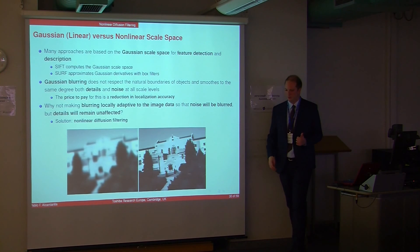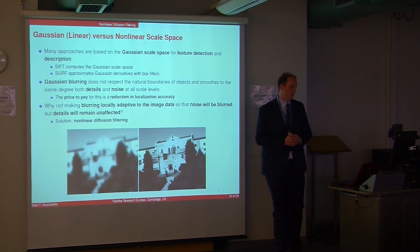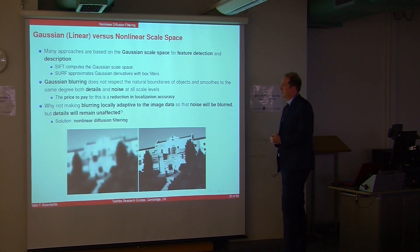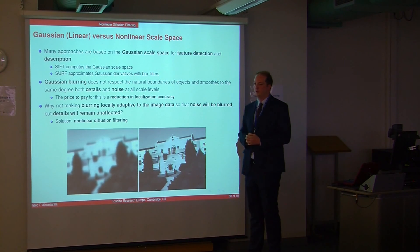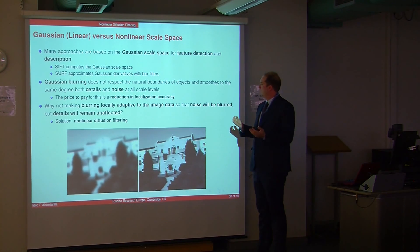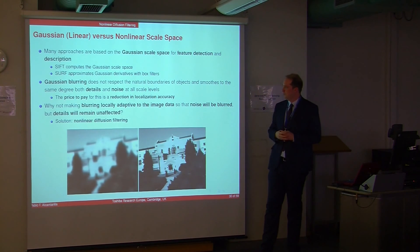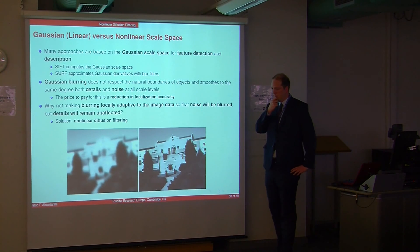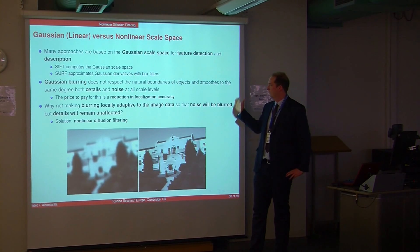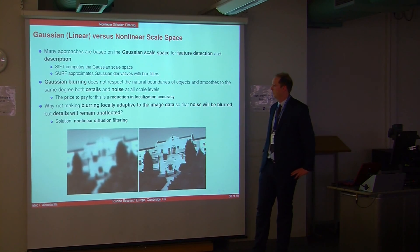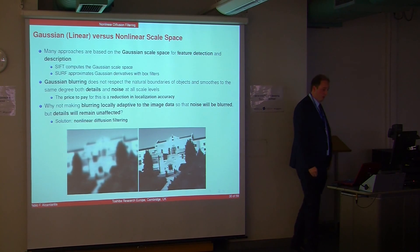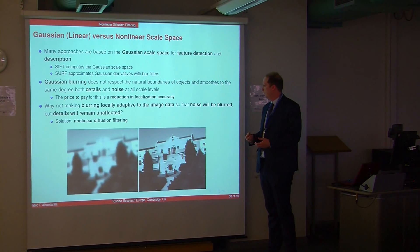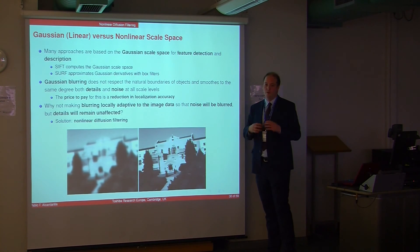Now we'll talk about non-linear diffusion filtering and features that operate in non-linear diffusion scale spaces. Most approaches we've seen use the Gaussian scale space — SIFT computes it, SURF approximates Gaussian derivatives. The problem with Gaussian scale space is that Gaussian blurring does not respect the natural boundaries of objects; it smooths details and noise equally at all scale levels, reducing localization accuracy.